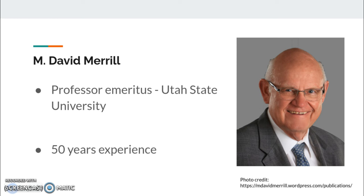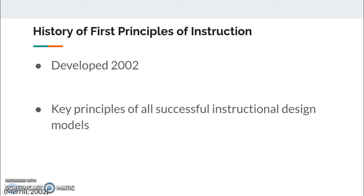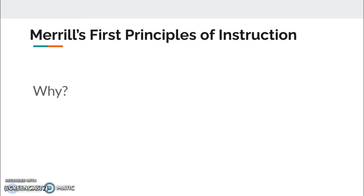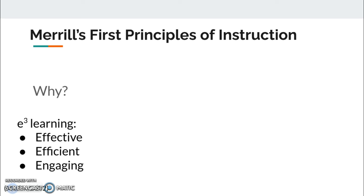Merrill's First Principles of Instruction was developed in 2002 after decades of research in instructional design. First Principles are simply fundamental principles that apply to all successful instructional programs and practices. The goal behind Merrill's years of research was to identify what he called E to the Third Power, or E3, learning — that is, instruction that resulted in learning because it was effective, efficient, and engaging. Merrill pulled common pieces or best practices of many instructional design models together into a list of fundamental principles, resulting in five fundamental principles of instructional design.